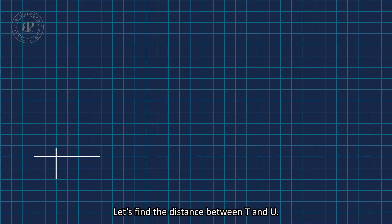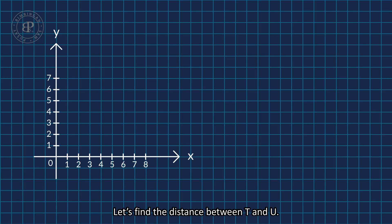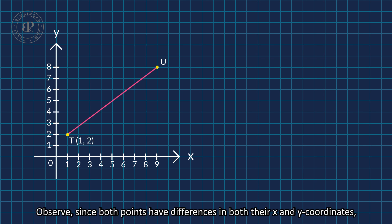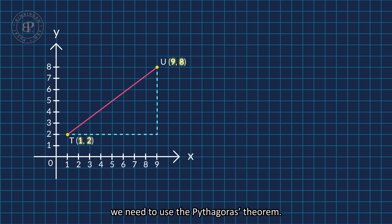Let's find the distance between t and u. Observe, since both points have differences in both their x and y coordinates, we need to use the Pythagoras theorem.